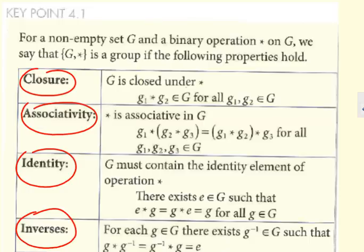The key word you need to look at here is for all, for each. When you're demonstrating a set together with an operation forms a group, you must satisfy all these conditions paying close attention to those words for all.